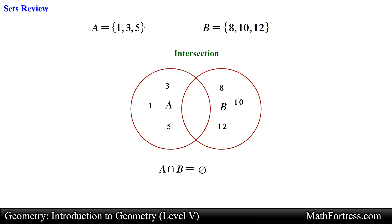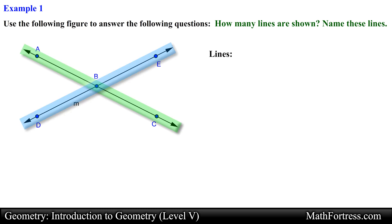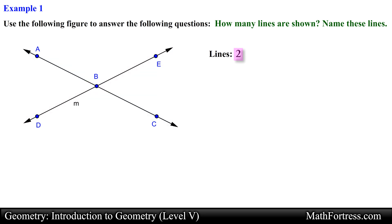Now that we are refreshed and familiar with the concepts associated with sets, let's go ahead and try the first example. Use the following figure to answer the following questions: how many lines are shown, and name these lines. By looking at the figure we can see that there are two distinct lines, so the answer to the first question is 2. Now the second question asks us to name them. Let's focus on the line that contains points D, B, and E.